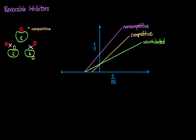If an inhibitor has the ability to bind to the enzyme even when the substrate is already attached, and it can reduce or stop the enzymatic reaction that way, then we call it a non-competitive inhibitor. Non-competitive inhibitors are almost always binding at an allosteric site — a site separate from the active site — whereas competitive inhibitors may bind to either the active site or an allosteric site.